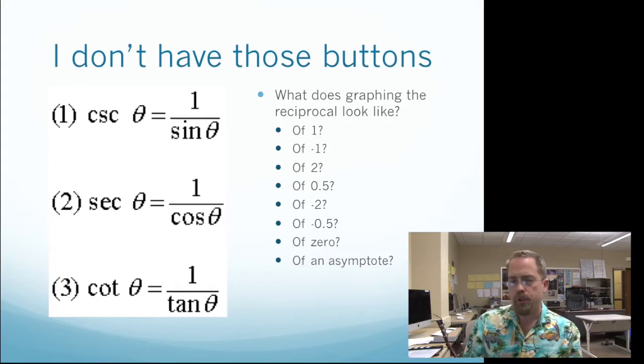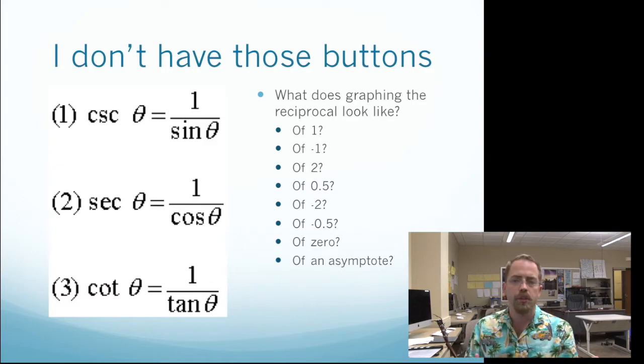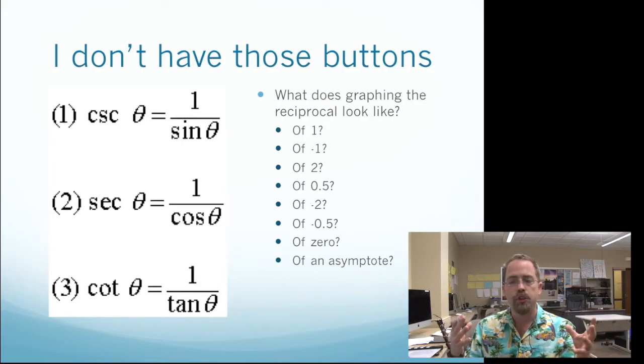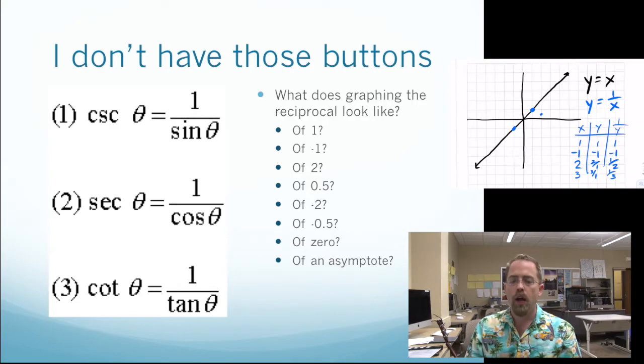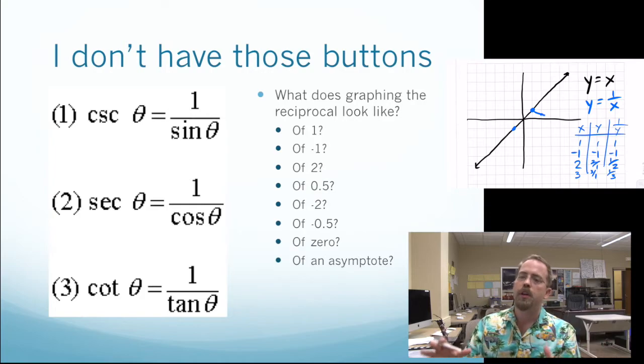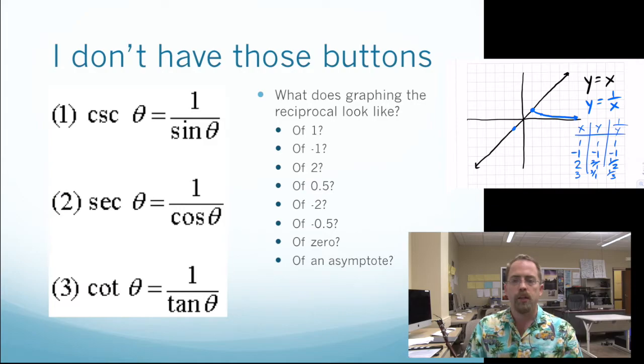What about secant, cosecant and cotangent? What do their graphs look like? So, we can't just put these into the calculator straight away. We've got no cosecant button, no cotangent button. But as you remember from when we did the part in the calculator where we wanted to calculate the values, we can just use the fact that they are reciprocals of the ones that we have.